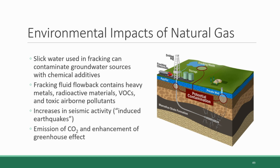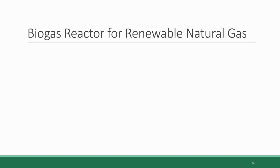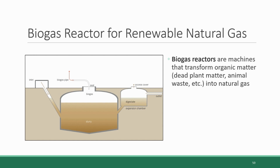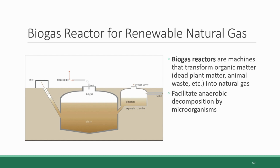Although natural gas is considered a fossil fuel because it originates the same way as other fossil fuels, not all natural gas is ancient in origin. Biogas reactors are machines that transform organic matter — including dead plant matter, animal waste, and even human sewage waste — into natural gas. They are anaerobic chambers, meaning chambers lacking in oxygen. By placing a slurry of organic waste into the chamber and maintaining certain temperature conditions, the slurry breaks down through anaerobic decomposition by microorganisms, parallel to how natural gas is created under natural conditions. The natural gas emitted by the microorganisms as they consume the waste material is referred to as biogas.